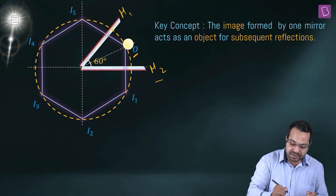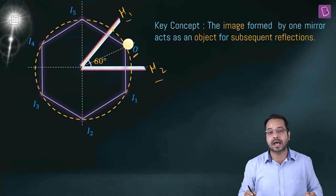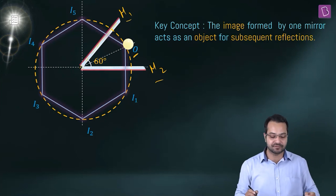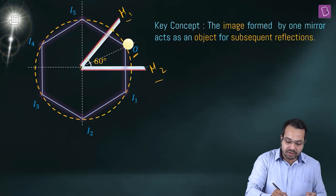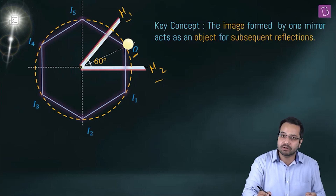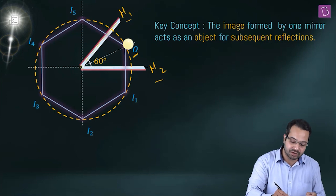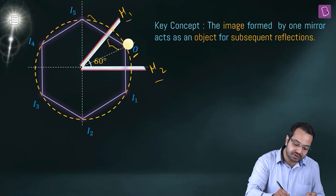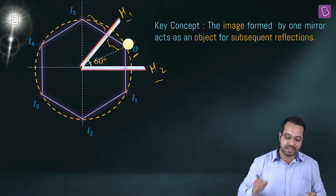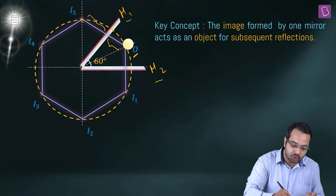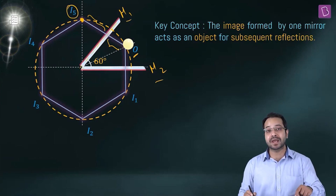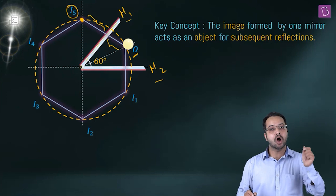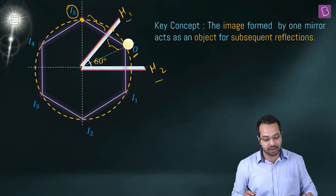Assuming reflection happens at M1 first. The object distance equals image distance, so the image is formed here. This image formed by M1 acts as an object for M2.